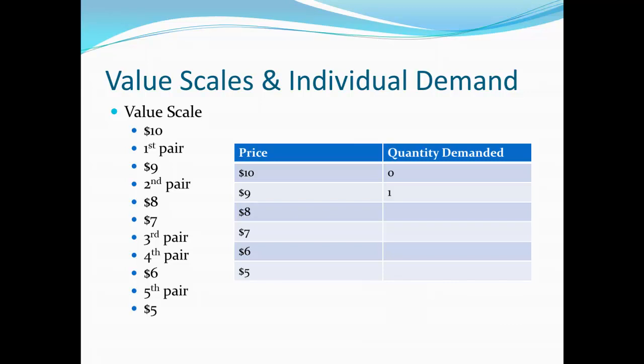Whereas if the hurdle is just a bit lower, say $9, the first pair of socks manages to jump over. If the hurdle is a bit lower — let's say $8 — I'll leave it to you to figure out how many pairs of socks will be demanded there. So take a few minutes, try to figure out what the rest of this individual's demand curve will look like for $8, $7, $6, and $5. How many pairs of socks are they going to buy at each of them? I'll give you a few seconds to do that — pause the video and work that problem.